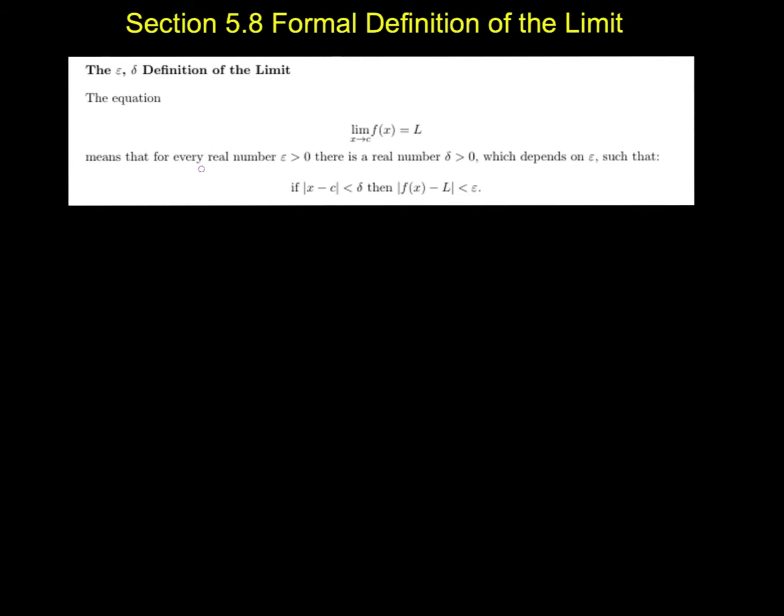that means for every real number—so notice we're not working with hyperreals—for every positive real number epsilon, there is another real number delta, such that as long as |x - c| < delta, then |f(x) - L| < epsilon. And hopefully from the previous videos,